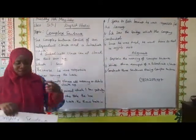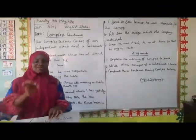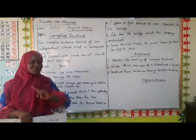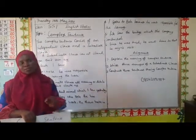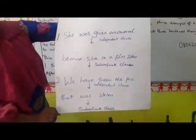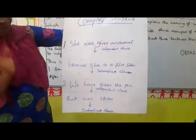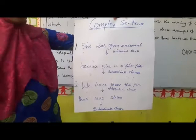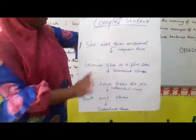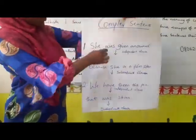When you have an independent clause, it means that it is the main clause — it is the main verb. That kind of sentence can stand on its own and make a complete sentence. The independent clause is the main sentence that can stand on its own and express a complete thought. For example, 'She was given an award.' This sentence is independent because it can stand on its own.